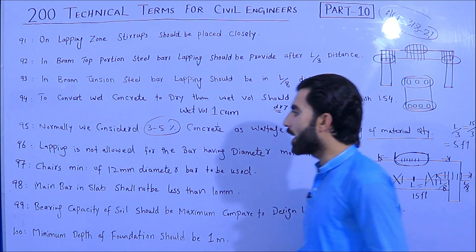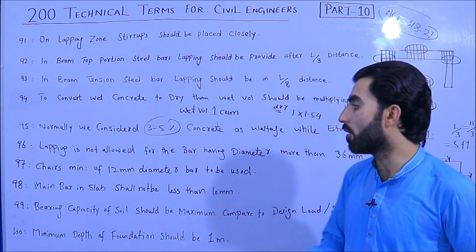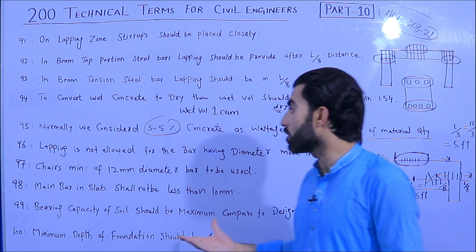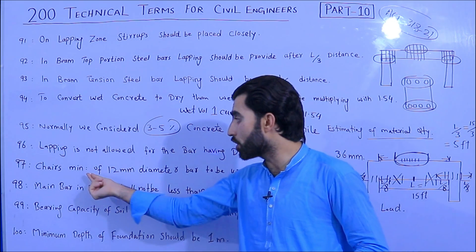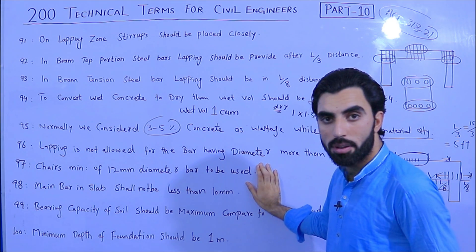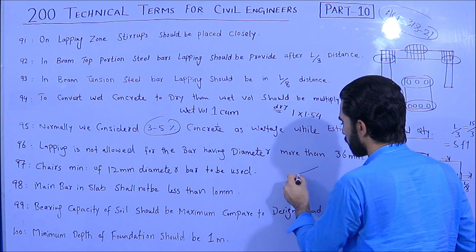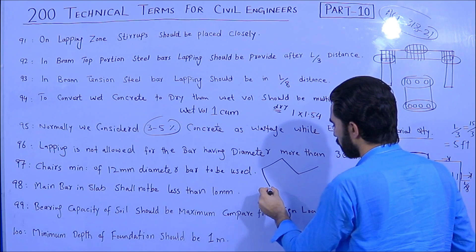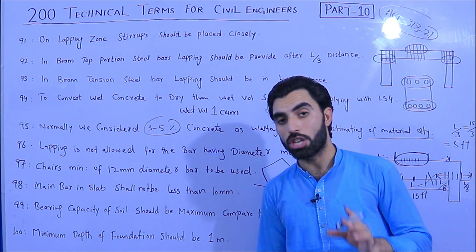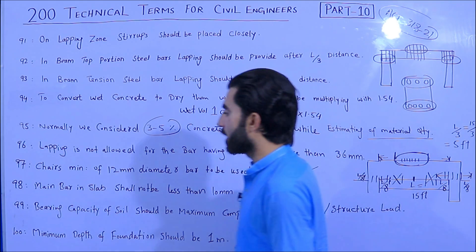Term 97: Chairs — used for spacing especially in slabs and raft foundations — must have a minimum diameter of 12 millimeters. The chair keeps the reinforcement at the correct position, and its minimum bar diameter should be 12 mm.